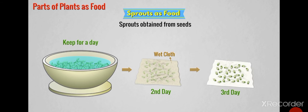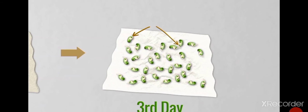Now put the seeds over wet cloth and cover them with the cloth. After a day, you will see white structures coming out of the seeds. Here we say that the seeds are sprouted.